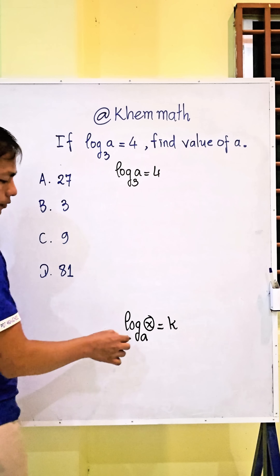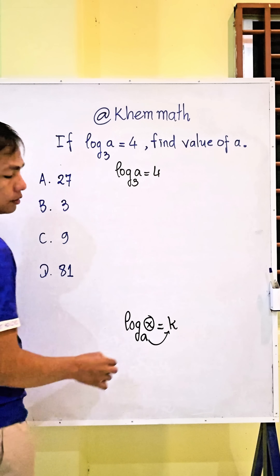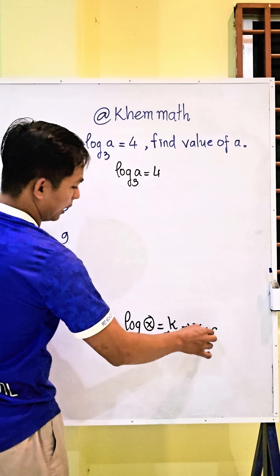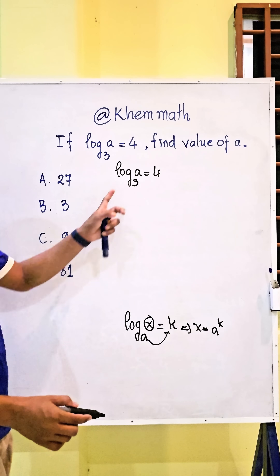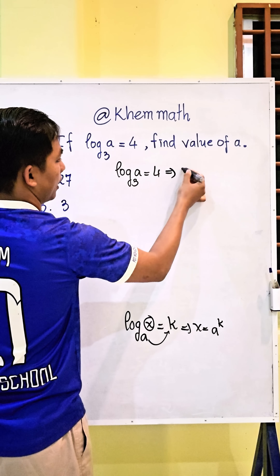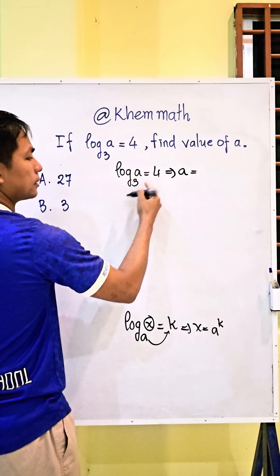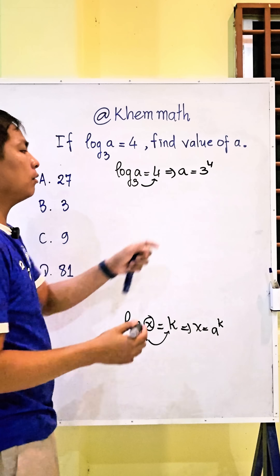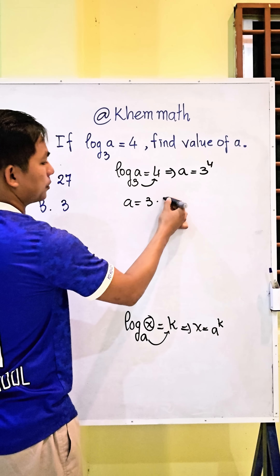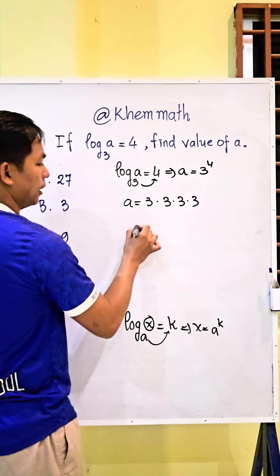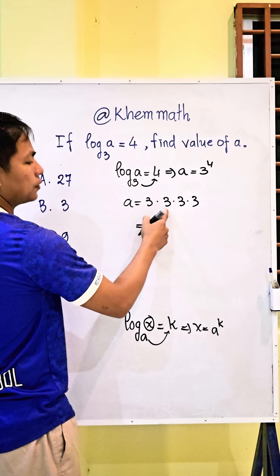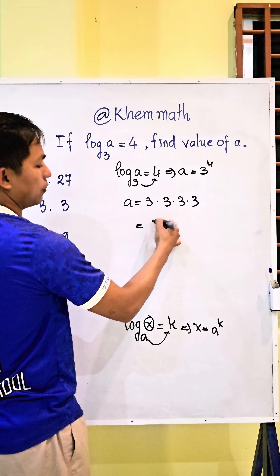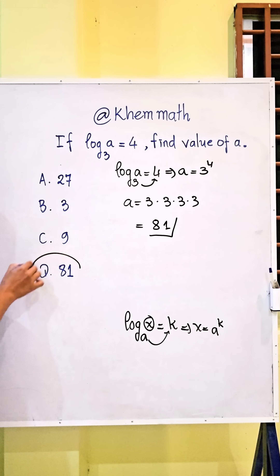we take a to the right-hand side, so x equals a to the power of k. Here, a equals 3 and k equals 4, so we compute 3 to the power of 4: 3 times 3 equals 9, 9 times 3 equals 27, 27 times 3 equals 81. So our answer is D, 81.